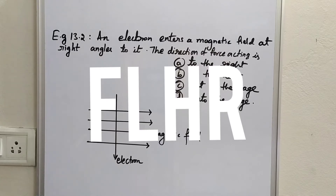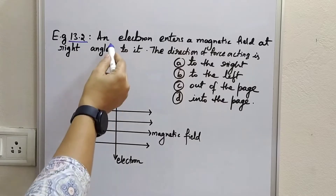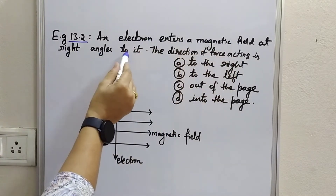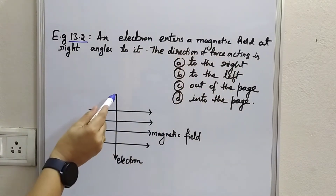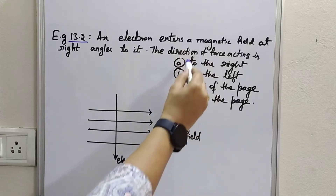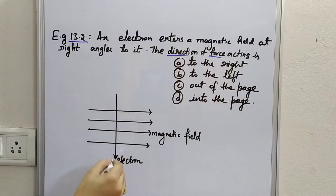Looking at example 13.2 from the NCERT textbook chapter on magnetic effects of electric current: an electron enters a magnetic field at right angles to it. This is the direction of the electron and this is the direction of the magnetic field. We are supposed to find the direction of force acting on the electron due to this magnetic field.